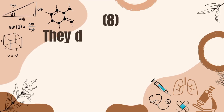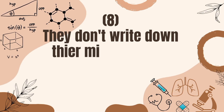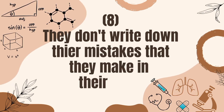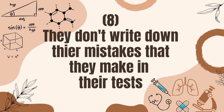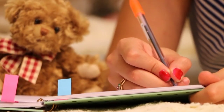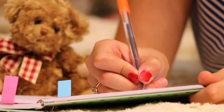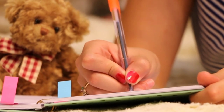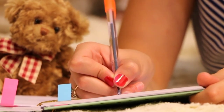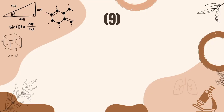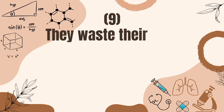Mistake number eight is that students who do attempt test sessions don't write down their mistakes. Because they don't write them down, they repeat the same mistakes next time. That's why I recommend you write down your mistakes after every test session.